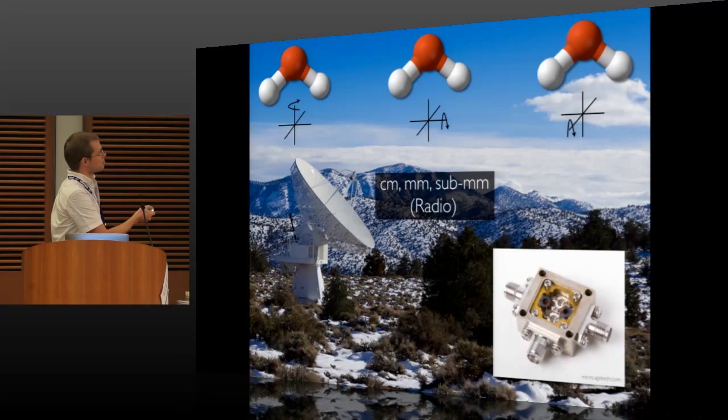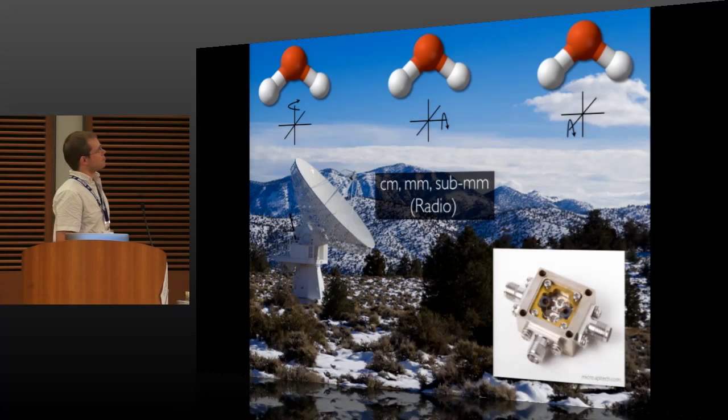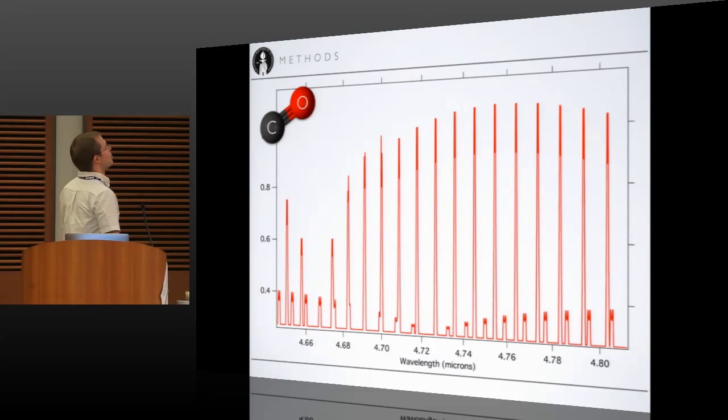And you use radio telescopes. This is one from the now defunct combined array for research in millimeter wave astronomy to detect rotational transitions of the molecules. So how does that work? Well, if you want to detect a molecule in space, first you have to understand what you're looking for. So you go into the lab,